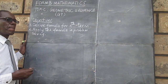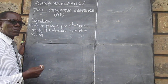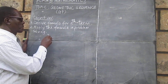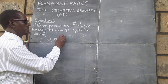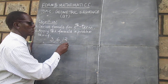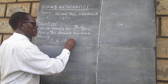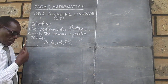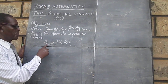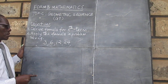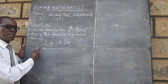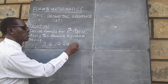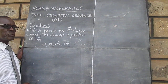Let's take a simple GP sequence. Looking at this sequence, we can see there is some kind of a pattern. We are moving from 3, then going to 6, then to 12, and then to 24. And the sequence continues like that.